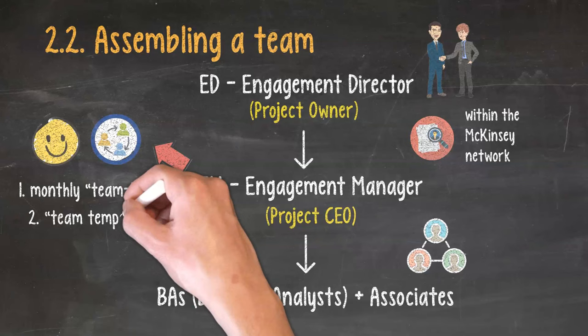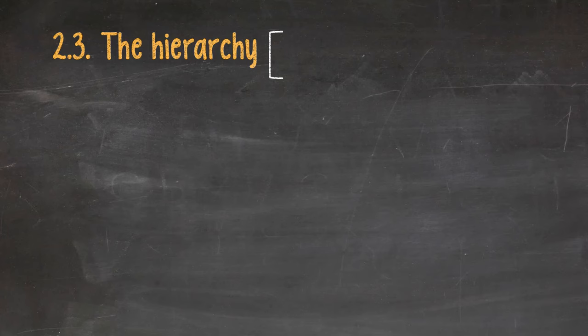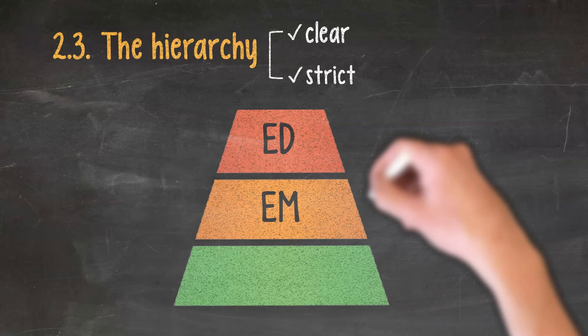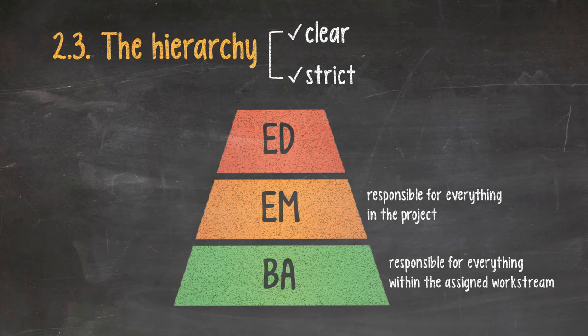2.3. The hierarchy. The chain of command in McKinsey is very clear and strict. So is the responsibility funnel. In the ED's eyes, the EM is responsible for everything in the project. In the EM's eyes, the BA is responsible for everything within the assigned work stream. Even when a BA messes things up to the ED, it's not the BA's fault, but the EM's.